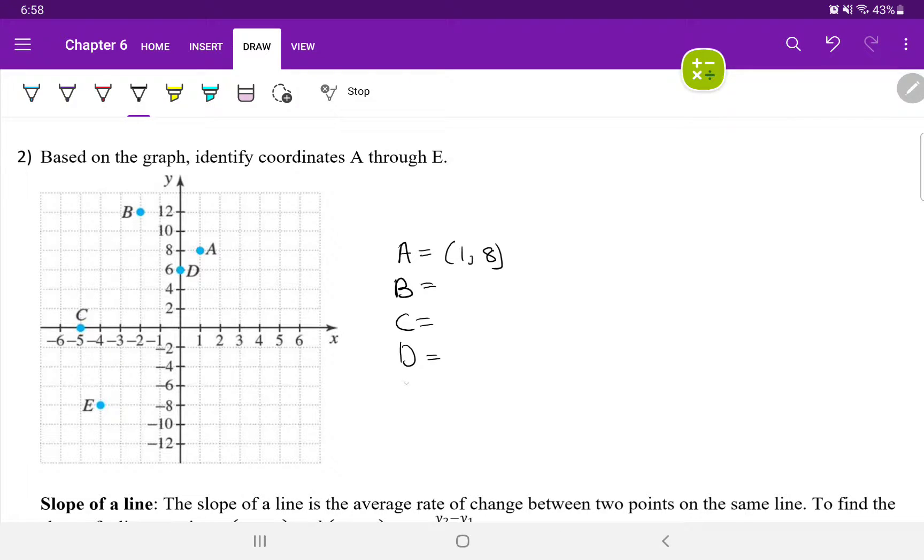When it comes to B. The x is negative two. The y is twelve. That's the point of (-2, 12).